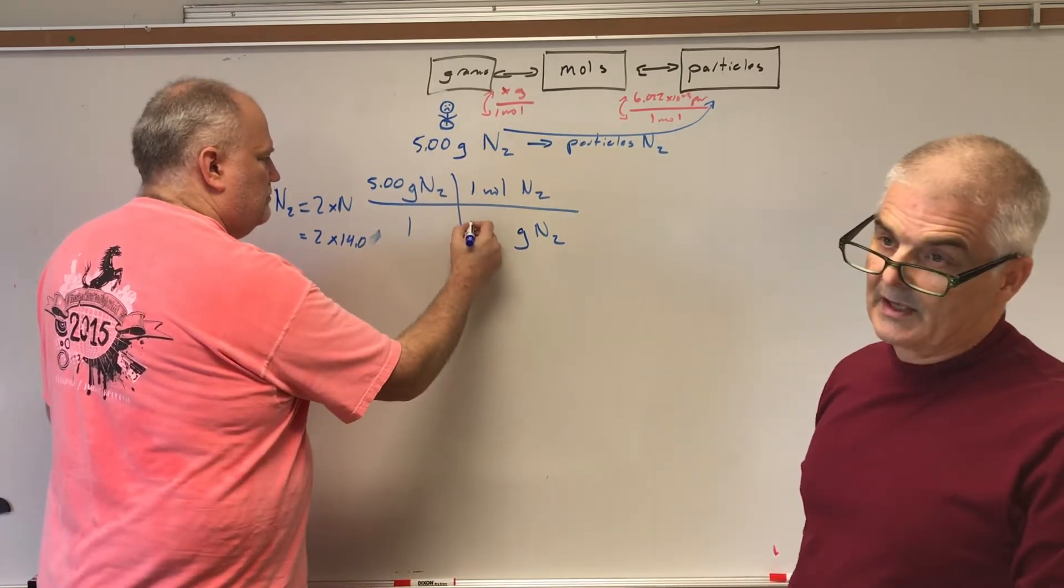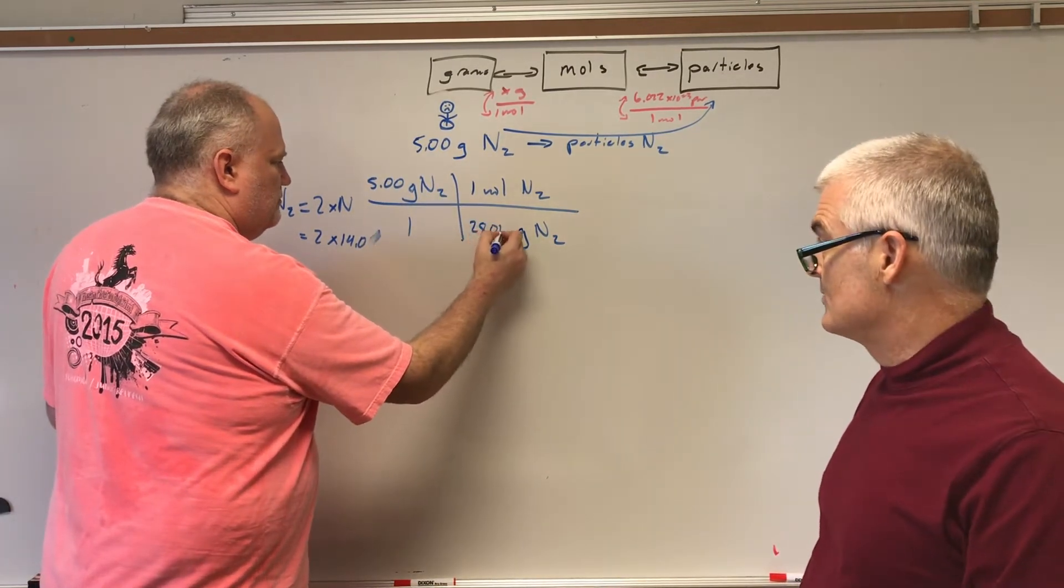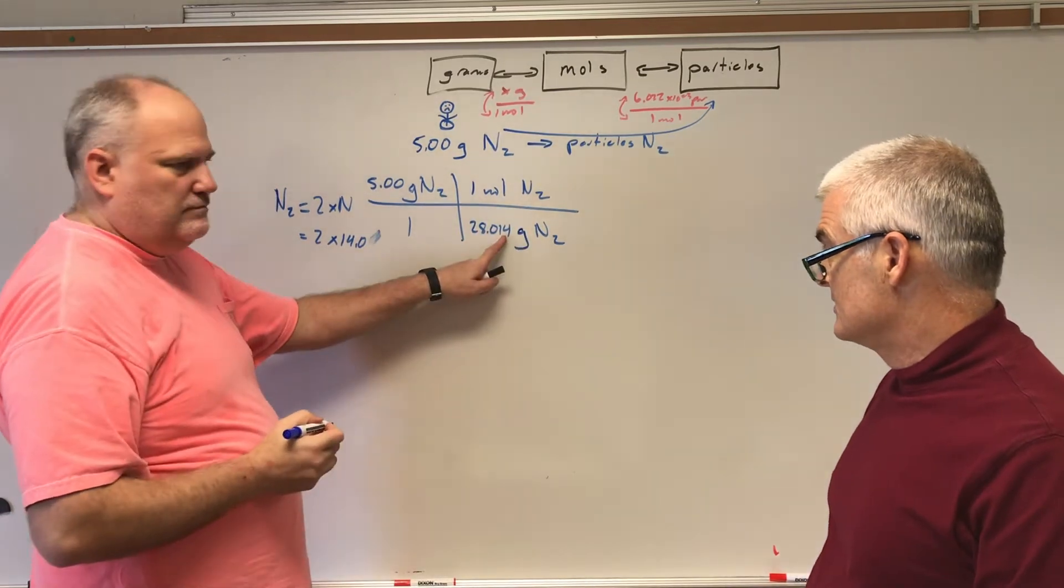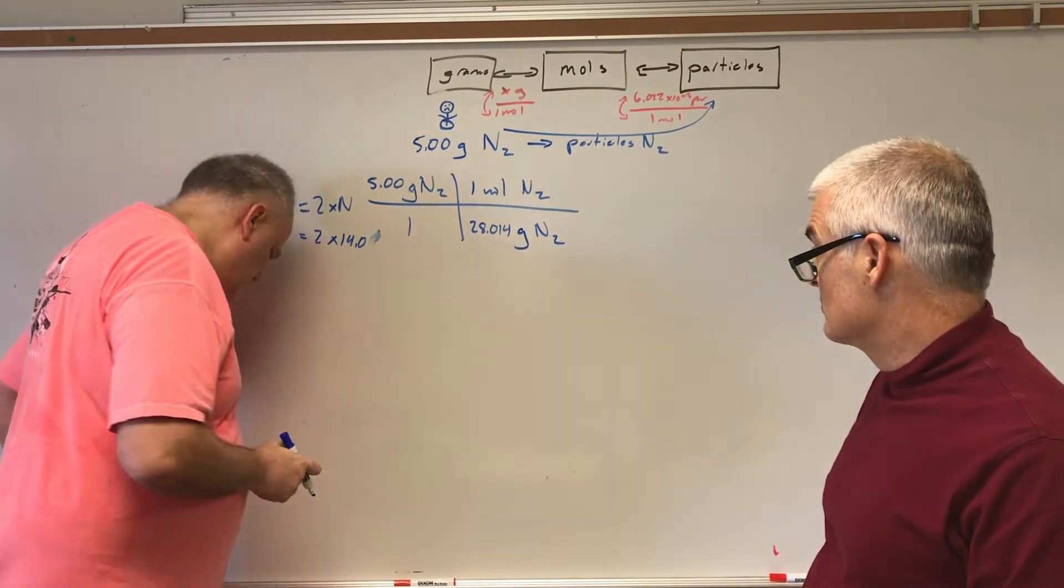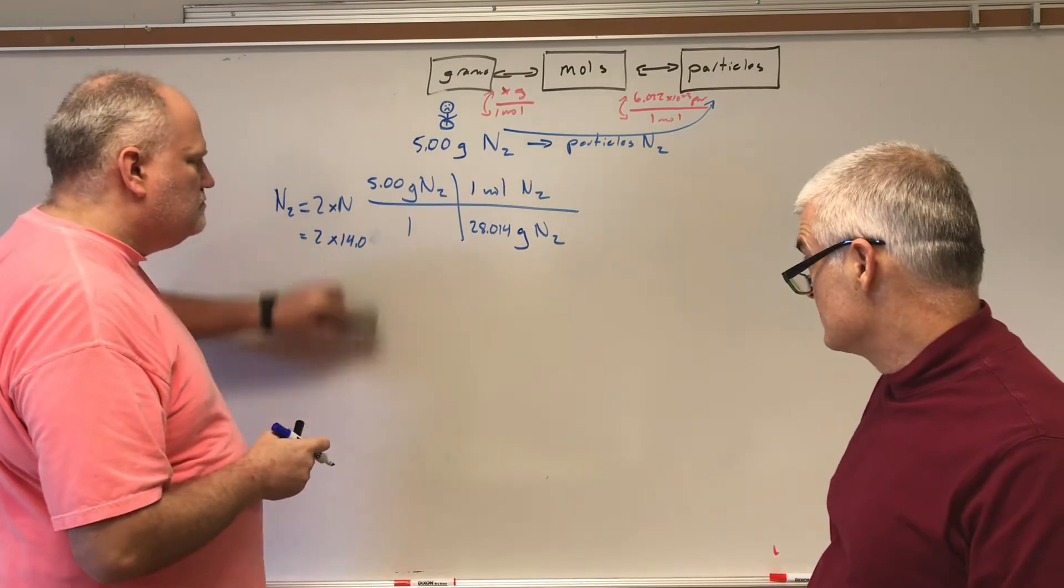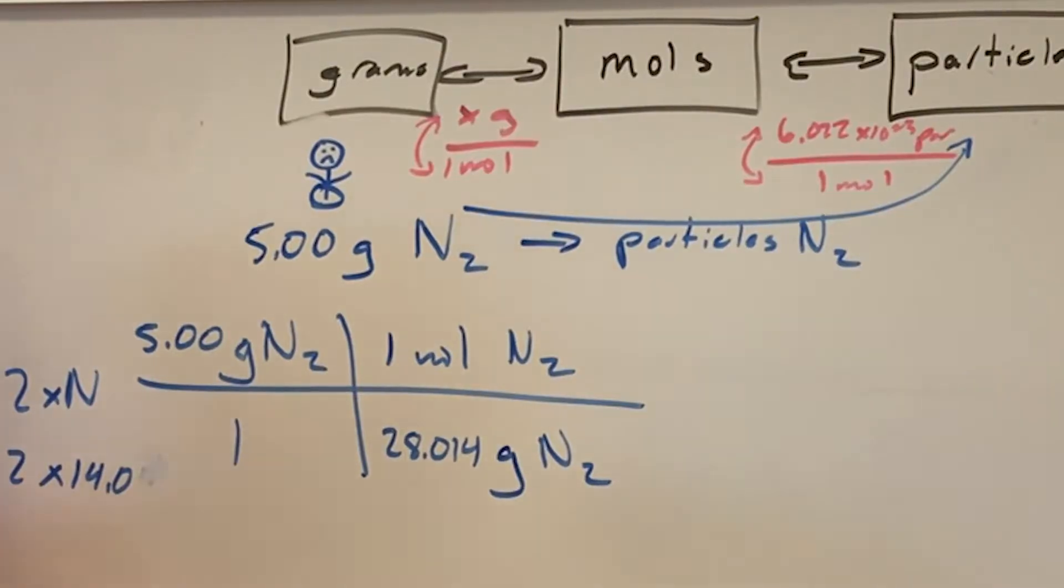One thing to note here is we like to round just to the hundredth place, two places. So I'd say 28.01. The 4 isn't necessary. And we get to cancel right now. So cancel those out.